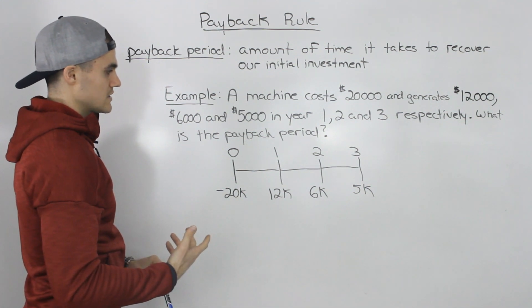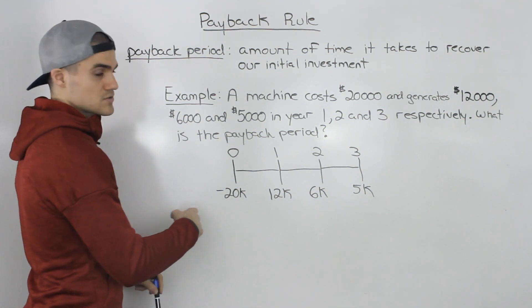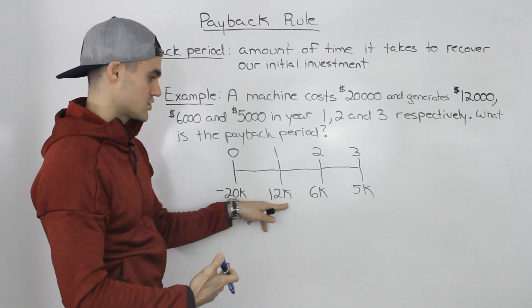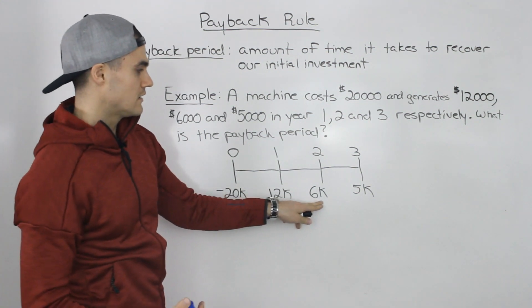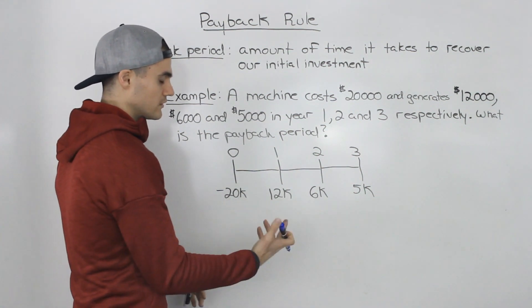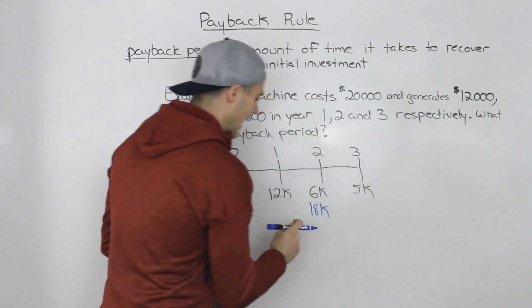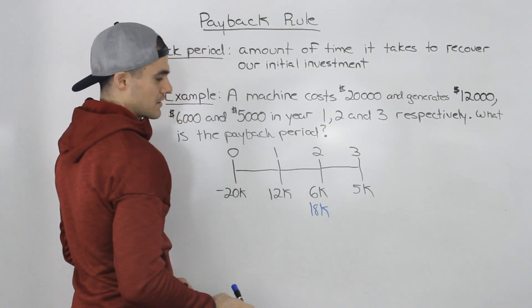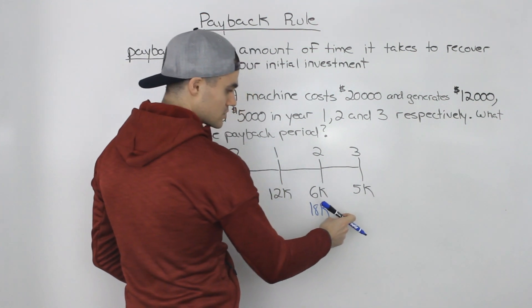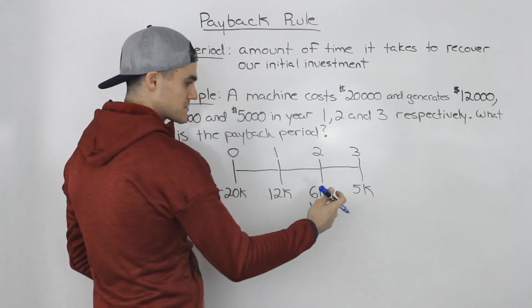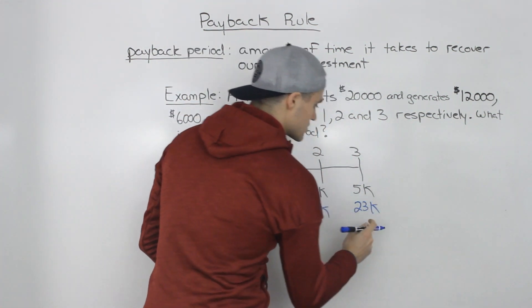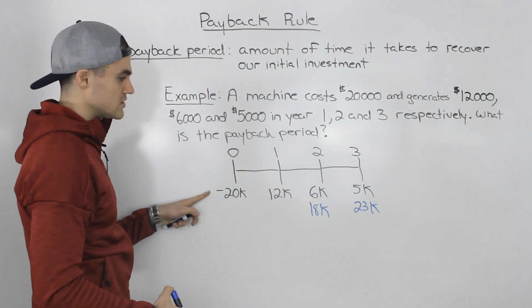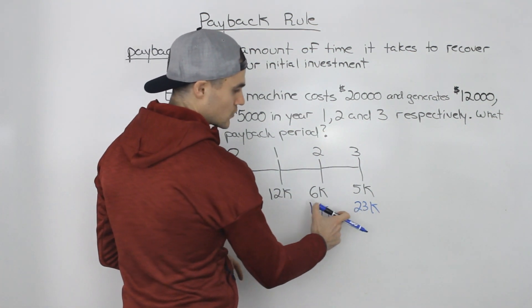How long will it take to recover the initial investment? In year one we make $12,000 cumulative. In year two we make $6,000 more, so cumulatively $18,000. In year three we make $5,000 more, so cumulatively $23,000. We need to recover $20,000, which falls between the $18,000 at year two and $23,000 at year three.